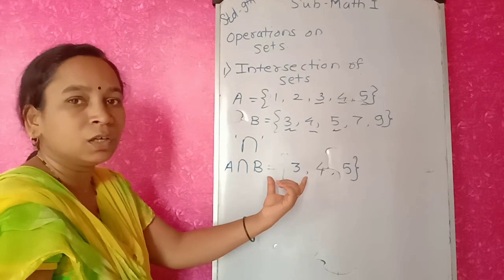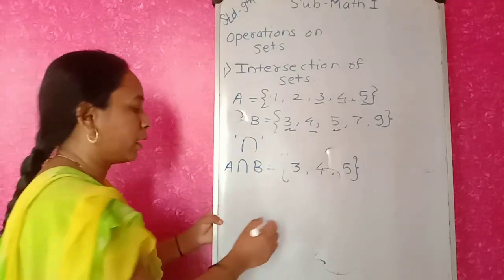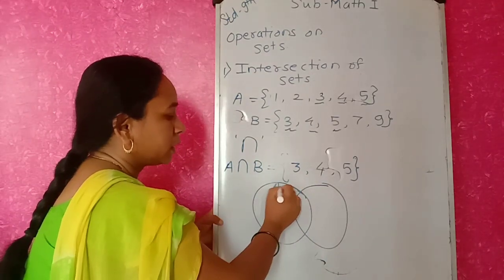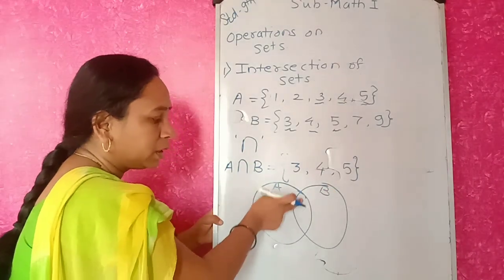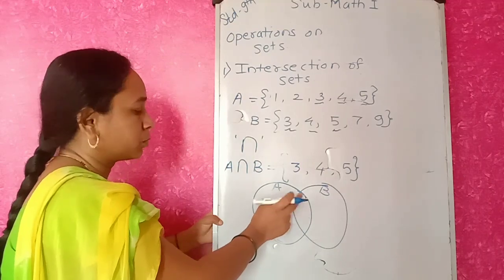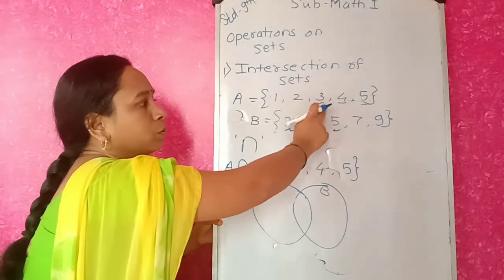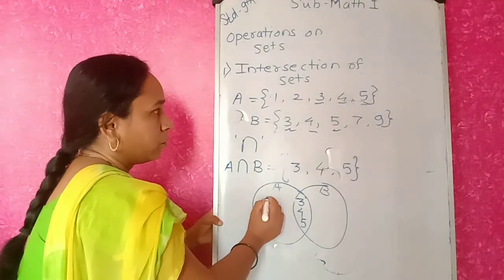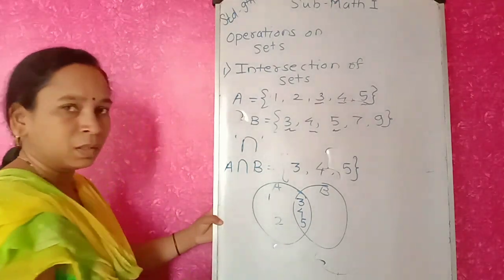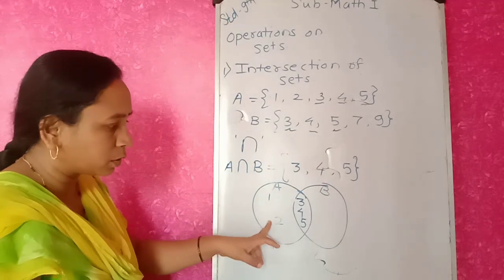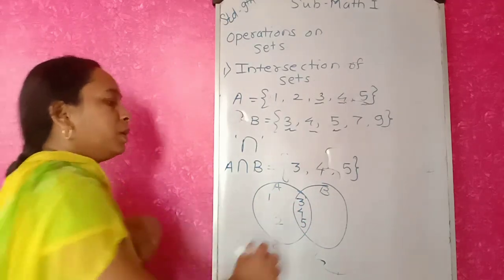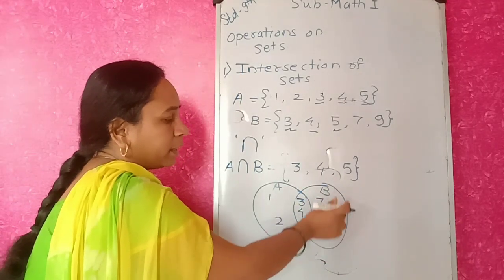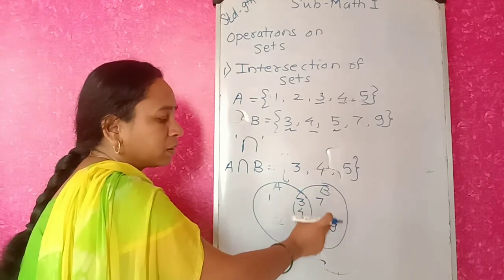Now how to represent this using the Venn diagram? To show intersection, A set and B set overlap, and the middle part is the intersection part — that means the common elements part. A set has {1, 2, 3, 4, 5}: 3, 4, 5 are common so they go in the middle, and 1 and 2 go in A's side only. B set has 3, 4, 5 in the common part, and 7 and 9 on B's side only.